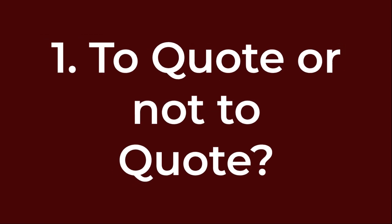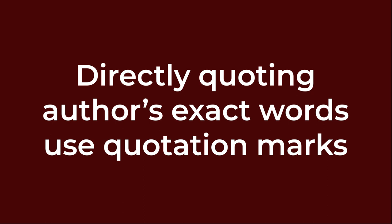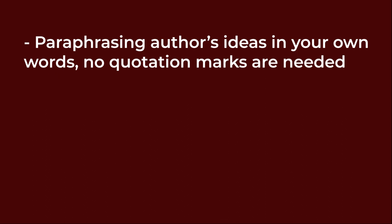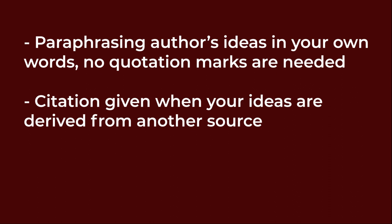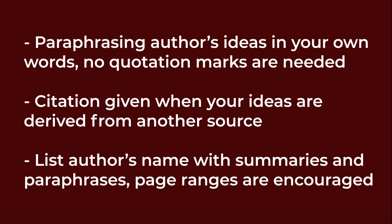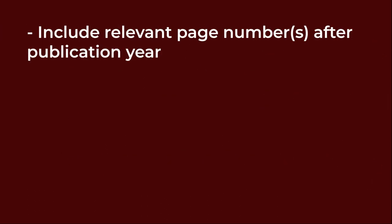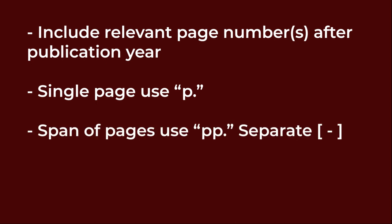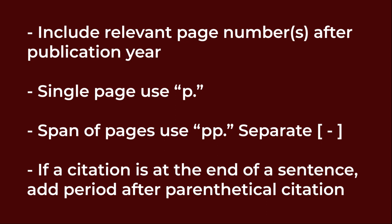Number one: to quote or not to quote. If you are directly quoting an author's exact words, use quotation marks around the text, then include your in-text citation. For example, "the impact of climate change is undeniable" (Smith, 2020). If you are paraphrasing the author's ideas in your own words, quotation marks are not necessary, but a citation should still be given when your ideas are derived from another source. With summaries and paraphrases, always list the author's name. The page numbers are optional, but a page range is encouraged. If the work you are citing has a page number, include the relevant number or numbers after the publication year. To cite a single page, precede the page number with the letter p with a period. To cite a span of pages, use pp. followed by a single period and separate the page numbers by a dash. If your citation is at the end of a sentence, always place a period after the parenthetical citation.